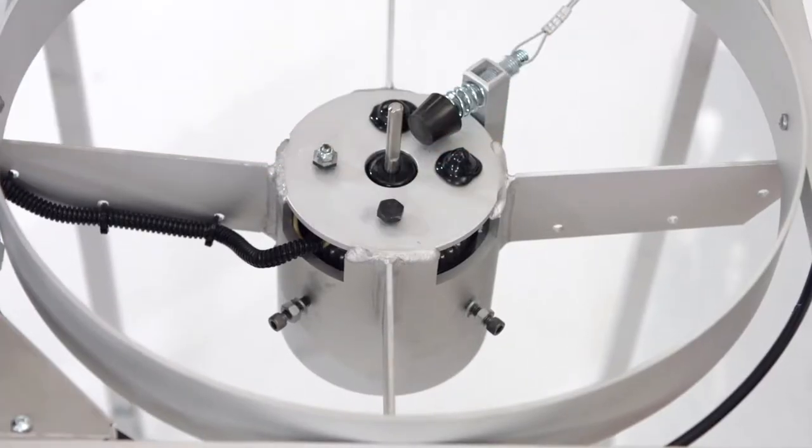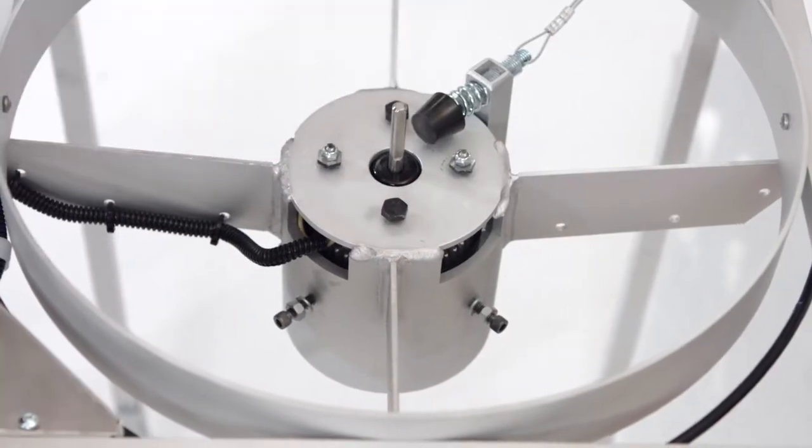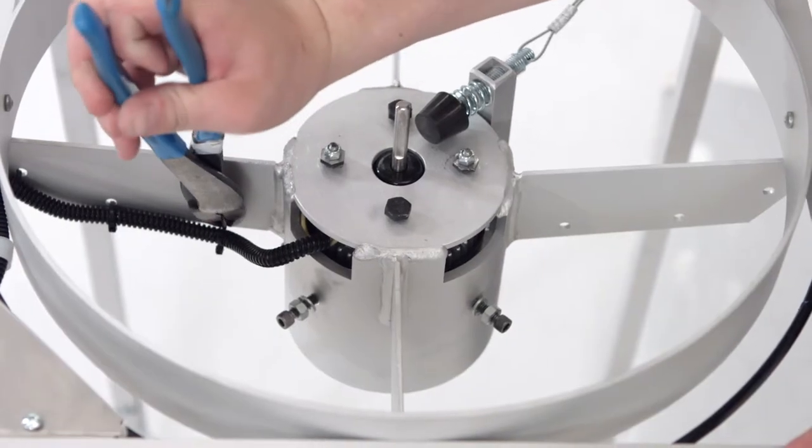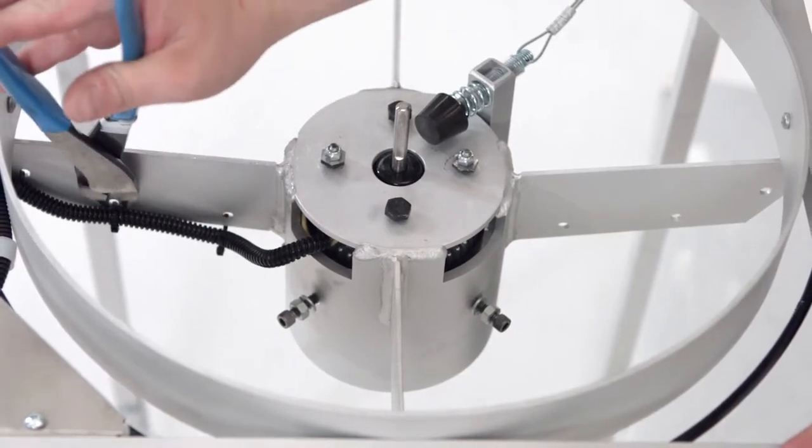Remove the black glue from the balancing bolts on the top of the motor's hub. Cut the tie wraps and remove the protective tubing from the wires.